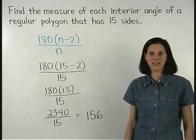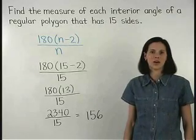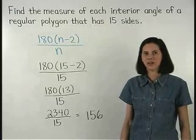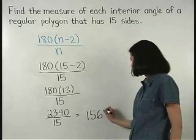So the measure of each interior angle of a regular polygon that has 15 sides is 156 degrees.